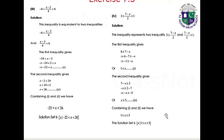Part 3: minus 6 less than (x minus 2)/4 less than 6. First inequality gives minus 24 less than x minus 2, so minus 22 less than x. Second inequality gives x minus 2 less than 24, so x less than 26. Combining: minus 22 less than x less than 26. Solution set: {x | -22 < x < 26}.